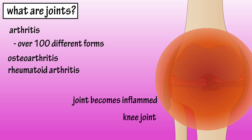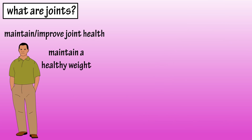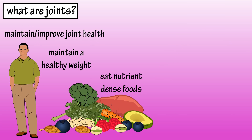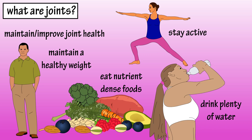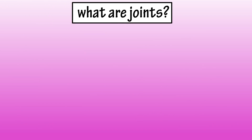Things you can do to maintain and improve joint health include maintaining a healthy weight, which will put less stress on joints; eat plenty of nutrient-dense foods like fruits, veggies, whole grains, and healthy fats; drink plenty of water, which can help joints stay lubricated; stay active; stretch regularly, putting joints through their normal range of motion; and avoid the same repetitive movements. And that would be the basics on joints.